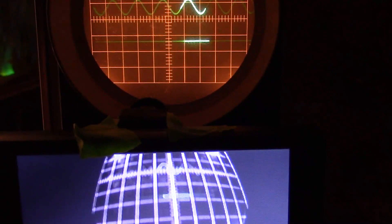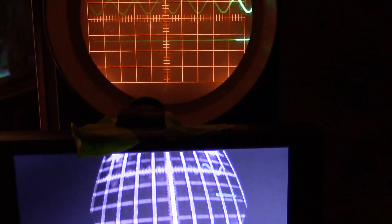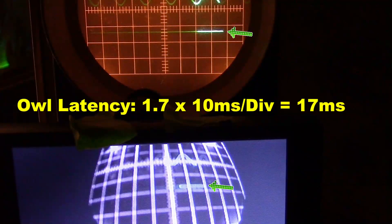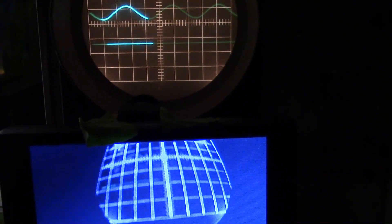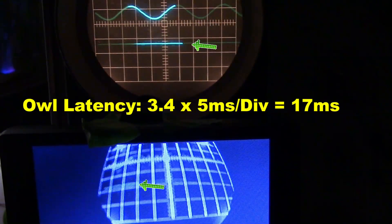Now this is the RunCam OWL at 10 milliseconds per division. You can see by looking at the two green arrows that we have about 1.7 grid spaces. 10 milliseconds per division is 17 milliseconds. Here's the RunCam OWL at 5 milliseconds per division. Looking at the arrows you'll see there's about 3.4, and multiplying we get 17 milliseconds. So it's confirmed.